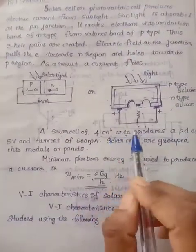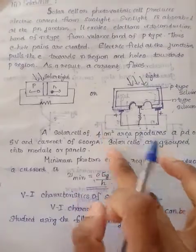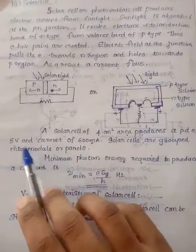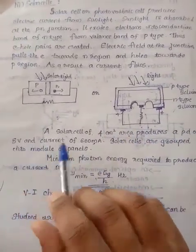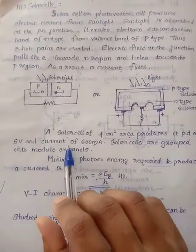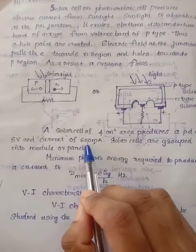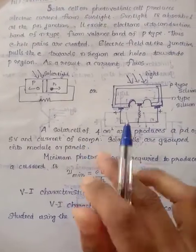The solar cell has a 4 cm² area. It will produce 5 volts and 600 mA.